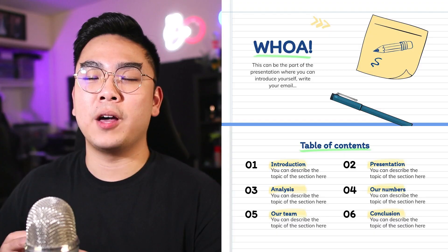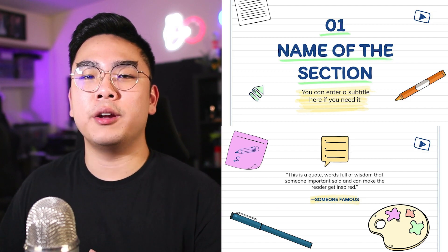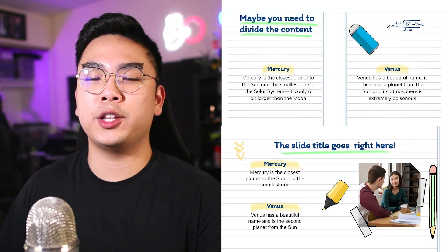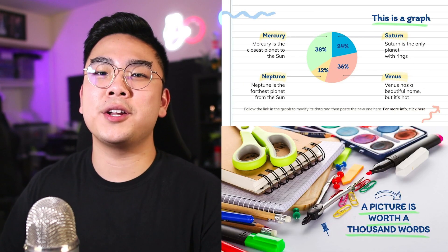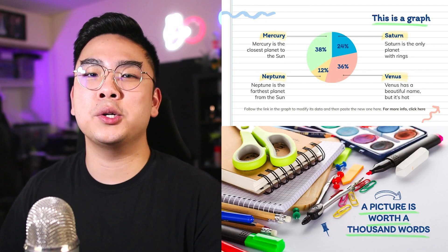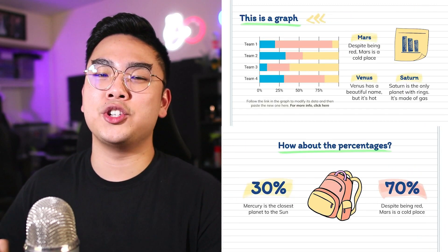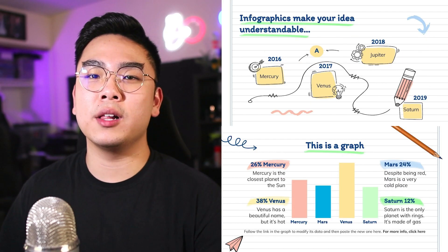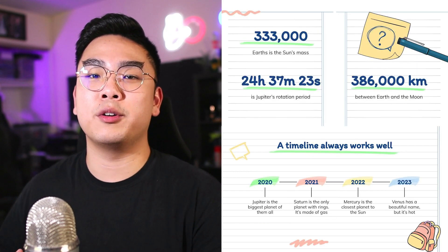Number three is the Online Notebook template. This is perfect for students or if you're looking for a more casual presentation — presenting to a close, casual group rather than doing a business pitch. The different pages have writing utensils and post-it notes that make it feel like a real notebook, like something you'd just jot down. It also comes in five different colors, so you can pick the color scheme that matches the mood of your presentation.